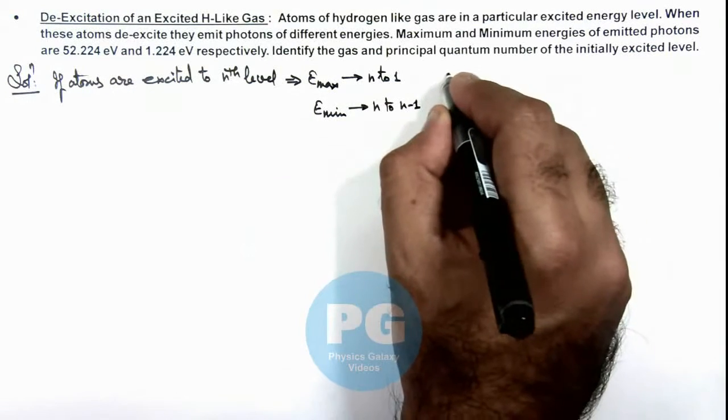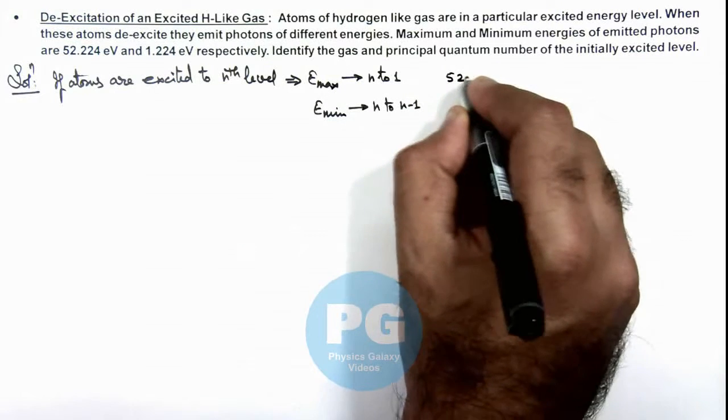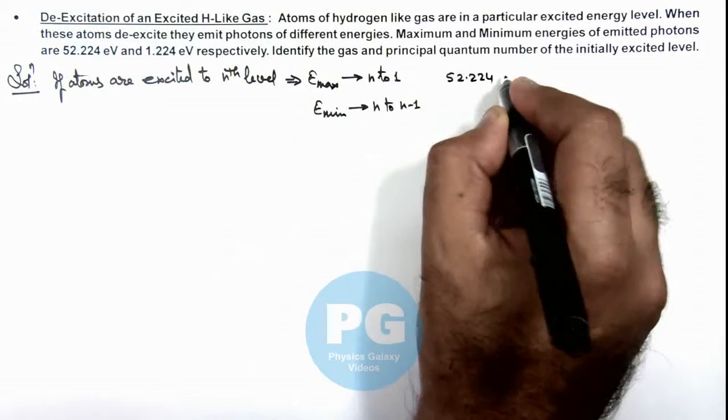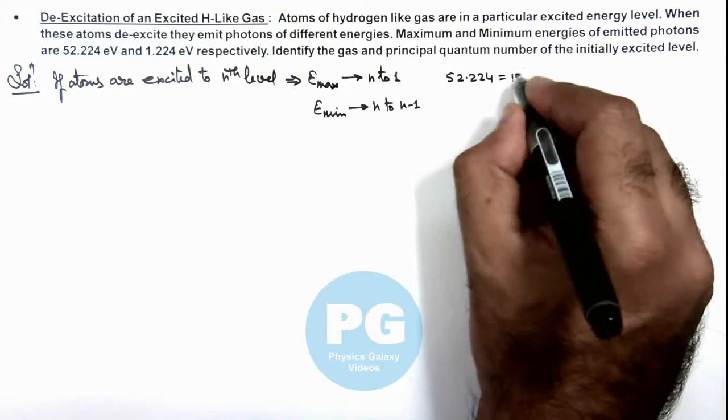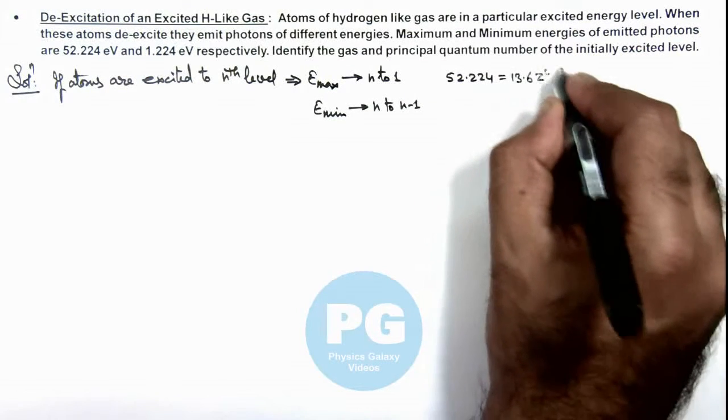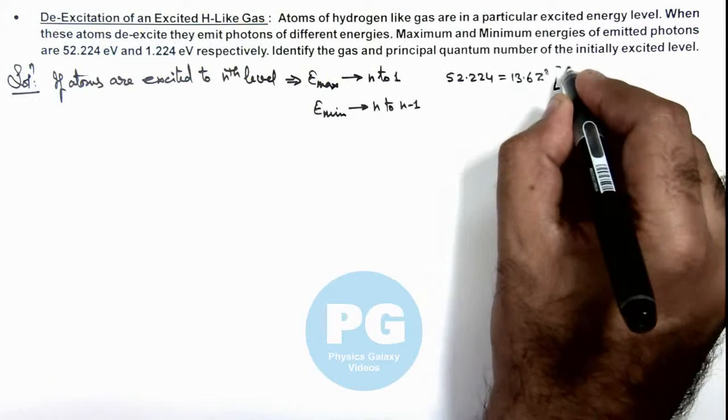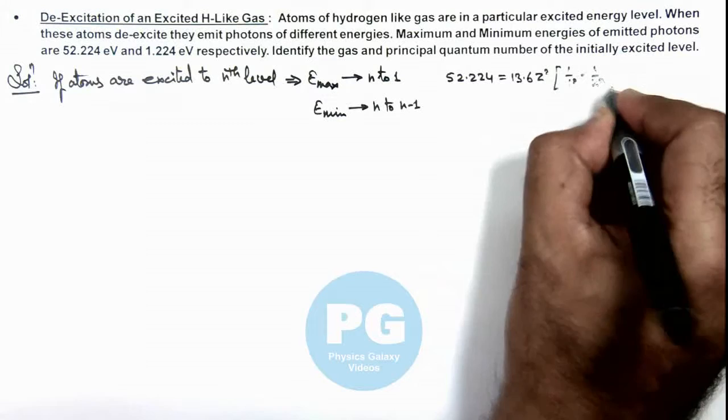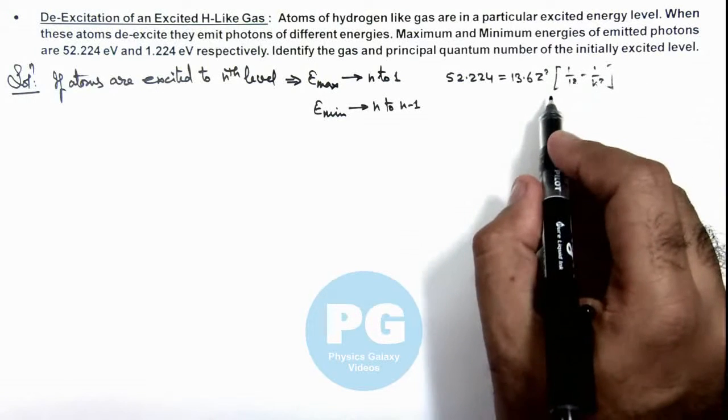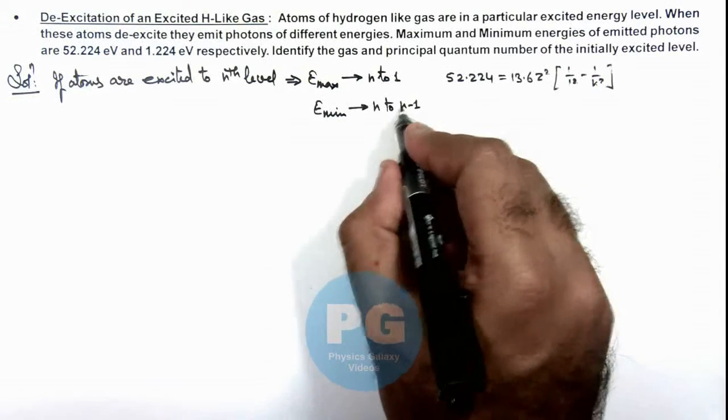For maximum energy, we are given as 52.224 electron volts. We can equate this value to 13.6 z² multiplied by 1/1² minus 1/n², that is the energy corresponding to transition from n to 1.